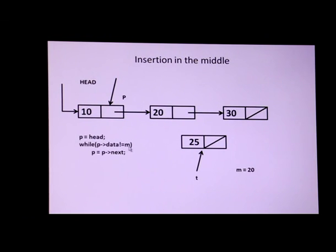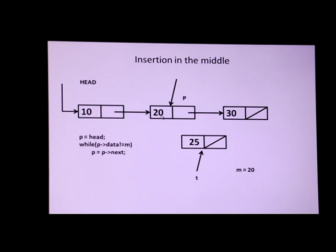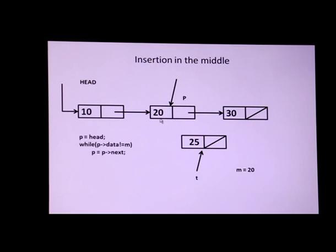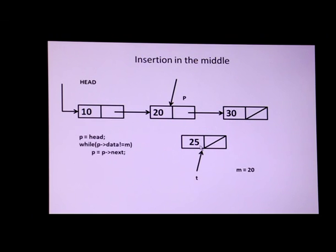First time it checks whether the data part is equal to M — it is not equal, so it moves to the next node. Now it checks whether the data part is equal to 20 — yes, it is equal. So we have reached the position after which we are going to perform the insertion.